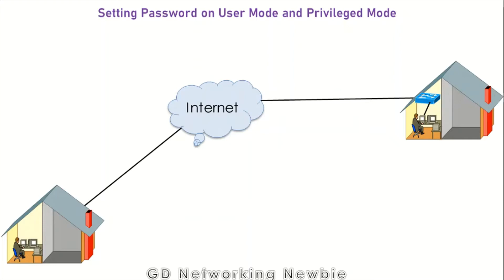To illustrate the idea, let's suppose we have a switch somewhere in our office or university. The switch has got some problem but we are not there — we are somewhere else, maybe at home — and now we want to access the switch remotely. So is there any way to access the switch when we are at some distance?